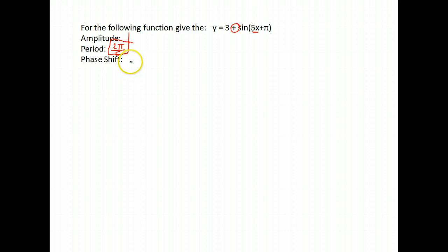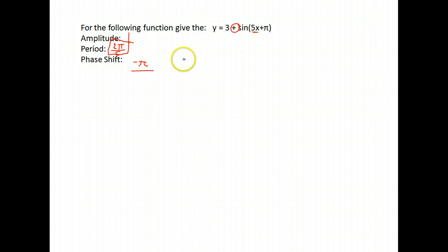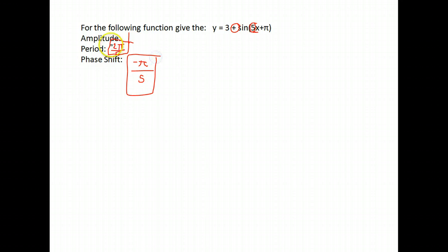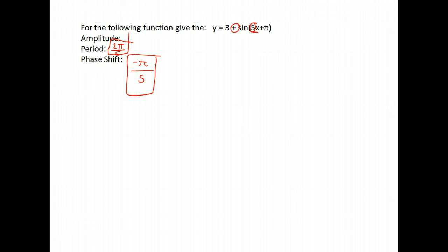For our phase shift, we take that number added or subtracted with our x — which in this case is π — change the sign, so write negative π, and divide by the number directly in front of our x, which was 5. So our phase shift is negative π over 5. This will have its period shortened to 2π/5, an amplitude of 1, and it's going to be moved π/5 units to the left. This plus 3 also moves it up 3.